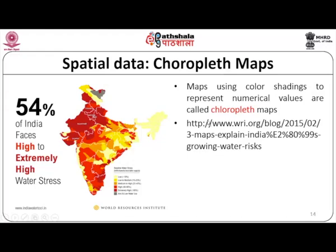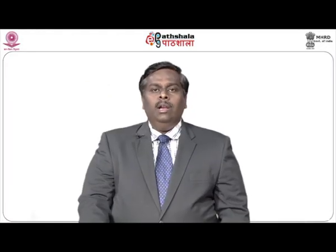Another way to represent spatial data is choropleth maps. Choropleth maps make use of different color shadings to represent numerical values. The choropleth shown here is related to water availability and water stress — regions with water shortages are highlighted with darker shades of red, and wherever there is less water scarcity, those regions are indicated by yellow shades. The shades ranging from dark red to yellow indicate the severity of water shortage.